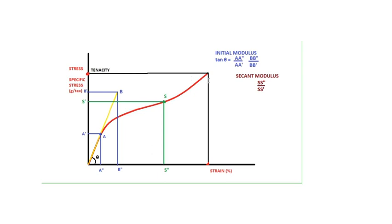So now we have understood what is the breaking point, what is tenacity, how a stress-strain curve looks, what is the Hookean region, and what is the initial modulus — which is tan theta, equal to AA'' divided by AA', or BB'' divided by BB'. We have also understood the secant modulus at any point on the curve, which is SS'' divided by SS'.